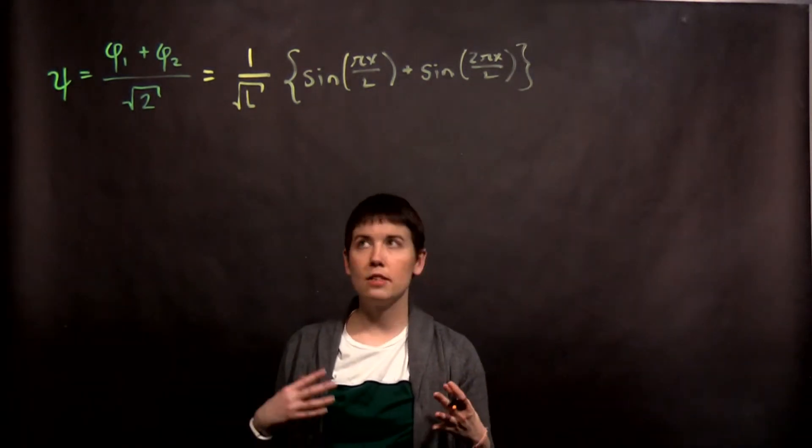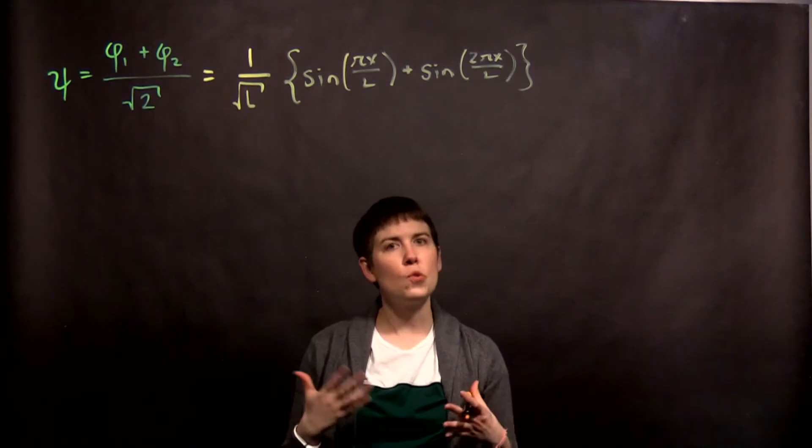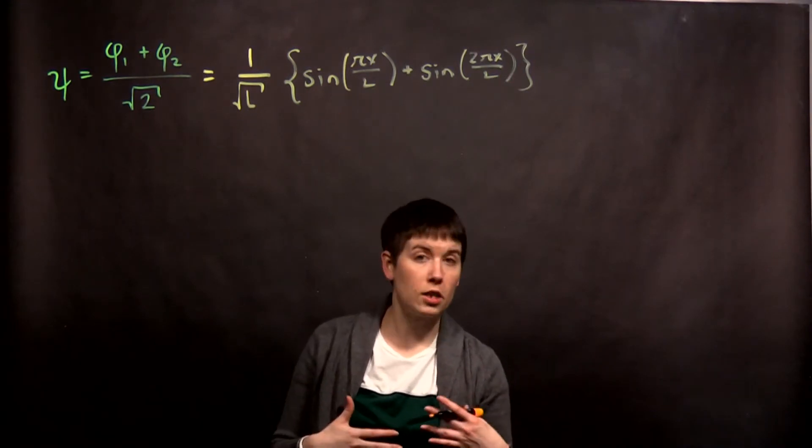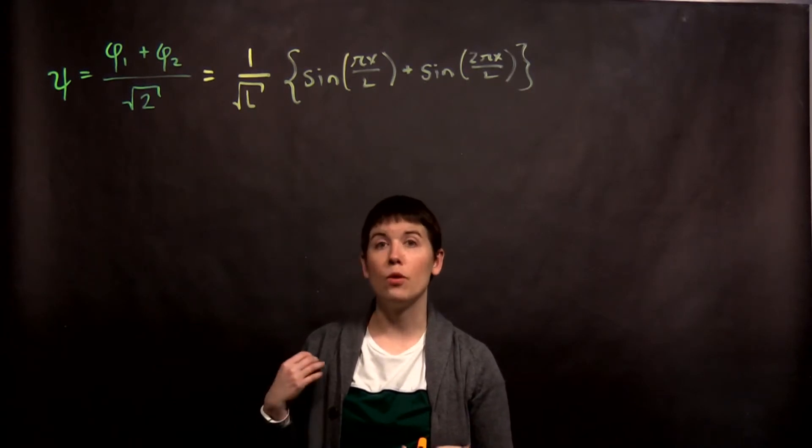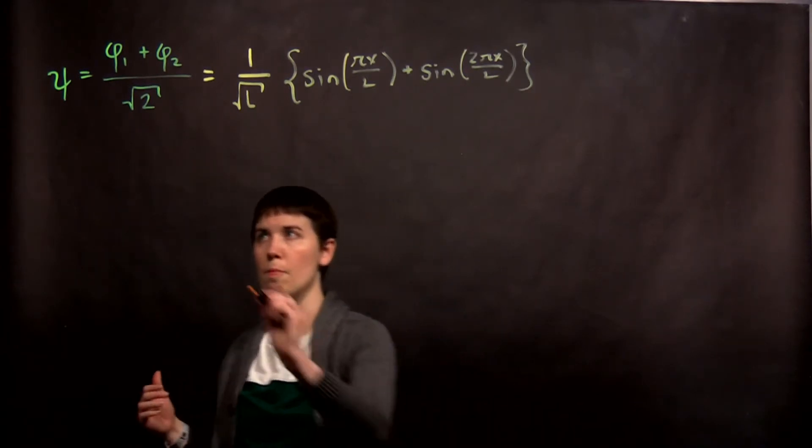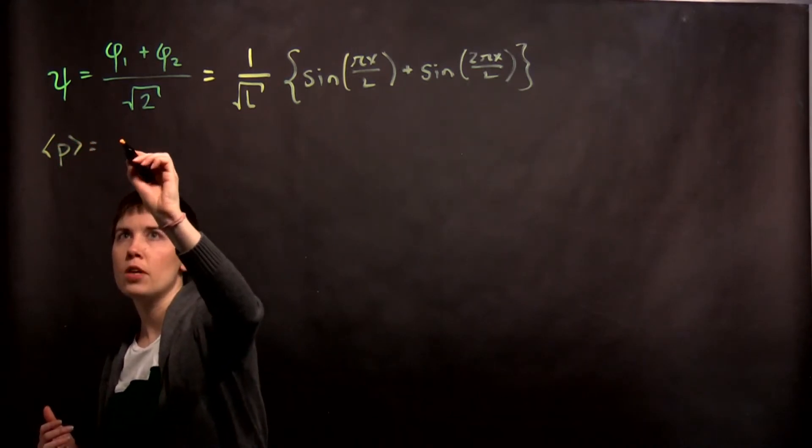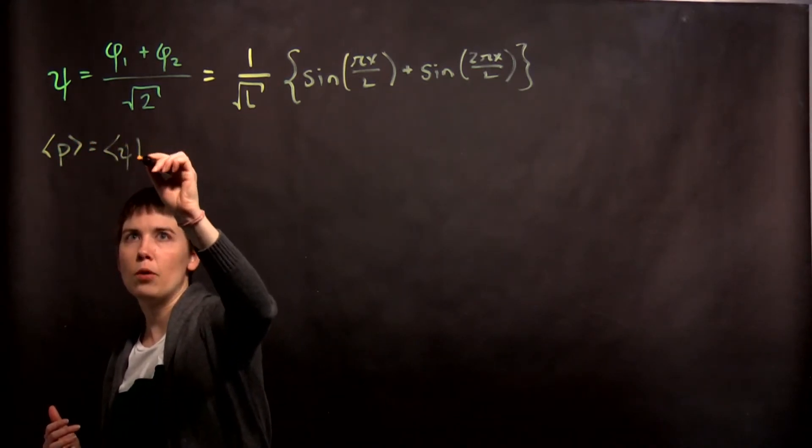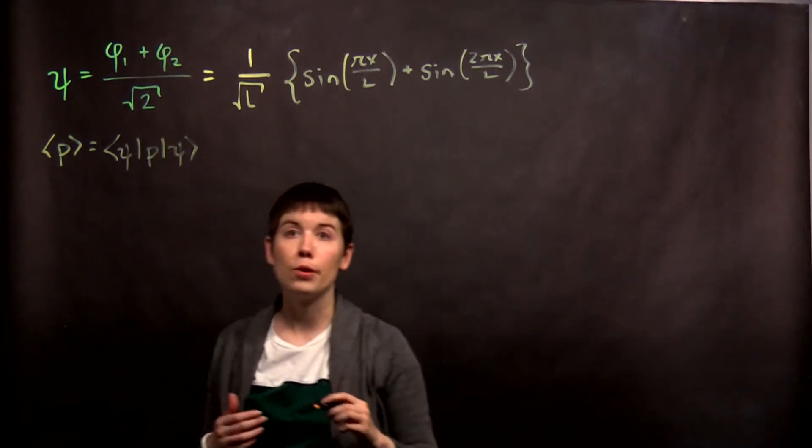So this is our wave function. It's a superposition state of our first and our second energy. So this is a state where we could say what's our expectation value of energy, what's our expectation of position, what's our expectation value of momentum? So let's do momentum. So if I say, what is my expectation value of momentum?